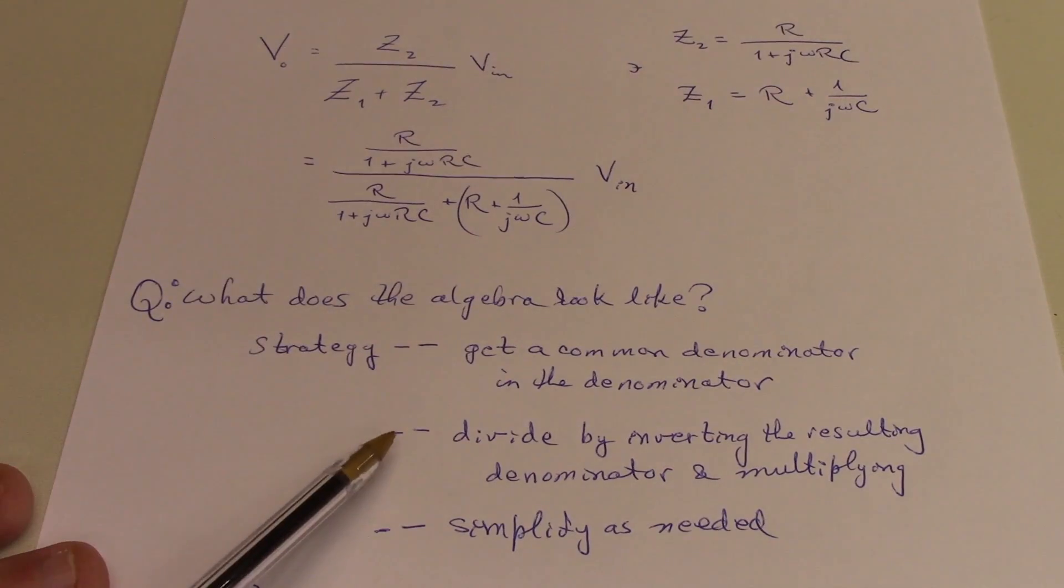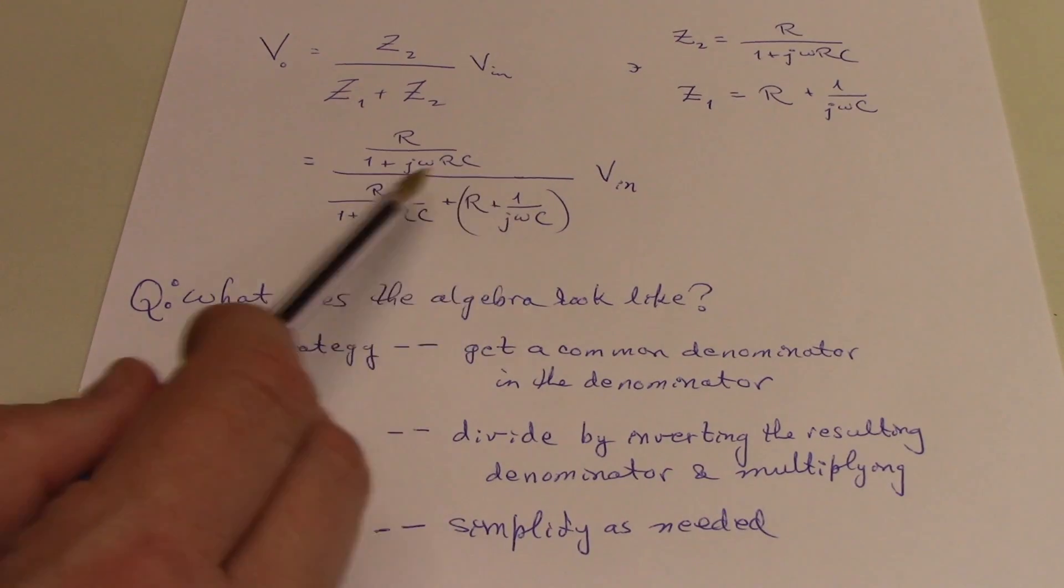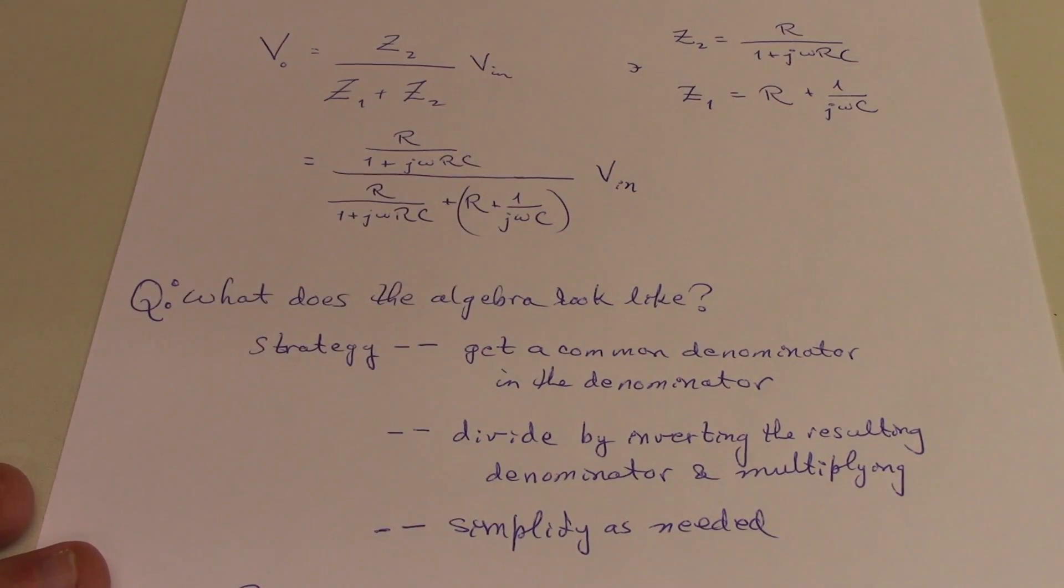Step two would be to carry out the division by inverting this more simplified denominator and then multiplying it by the numerator. And then step three would be to simplify the resulting expression and derive the result.